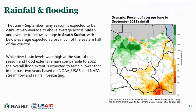The June to September rainy season is expected to be cumulatively average to above average across Sudan and average to below average in South Sudan, with below average expected across much of the eastern half of the country. For South Sudan, while river basin levels were high at the start of the season and flood extents remain comparable to 2022, the overall flood extent is expected to remain lower than the past two years based on NOAA, USGS, and NASA stream flow and rainfall forecasting. Key factors associated with catastrophic flooding in the past four years—including early start to the rainy season, higher intensity of rainfall during peak months of August and September, late end to the season, and above average rainfall upstream in Uganda—have not and are not likely to emerge this season.